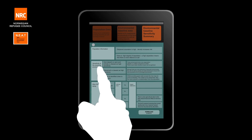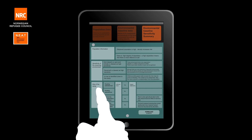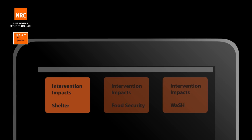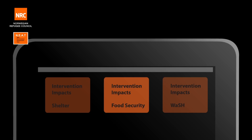A summary screen collects your answers and can be downloaded for reporting. The screens after this start to collect information on NRC project and programme interventions. Shelter, wash, and food security are the three core competencies that have the potential for greatest impact on the environment.